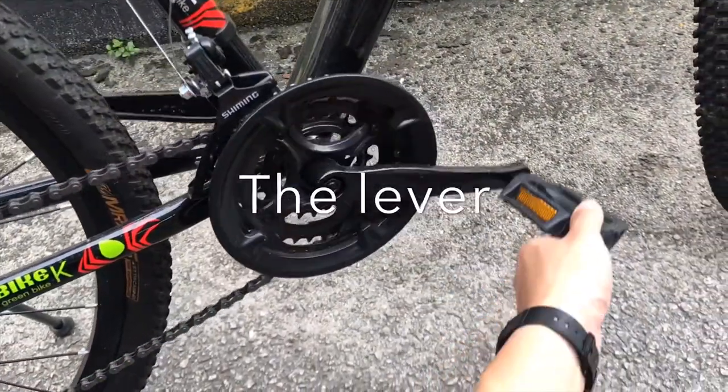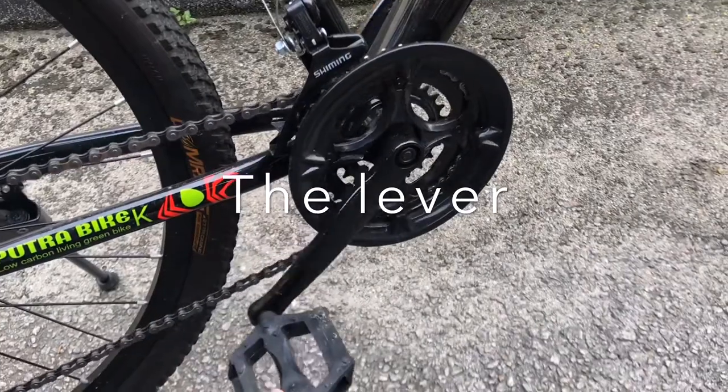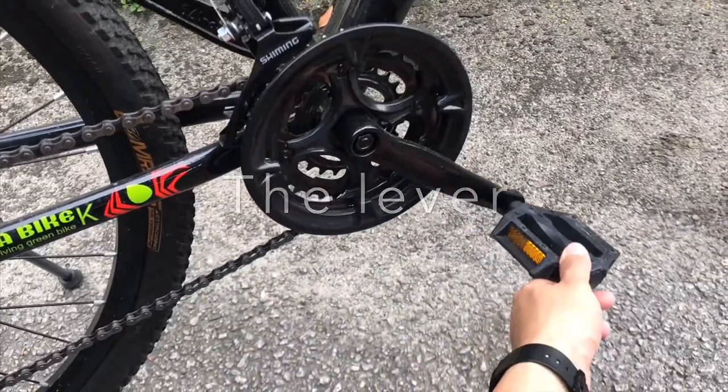Lever is a long tool such as a pole or a rod put under an object to lift it. The lever is more efficient when combined with a fulcrum.